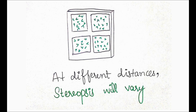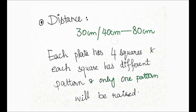The patient must tell you which pattern appears raised. So you ask the patient which pattern is raised and they identify it. At different distances the stereopsis value will be different, so you have to note at which distance you are performing the test and which plate you are showing to the patient.